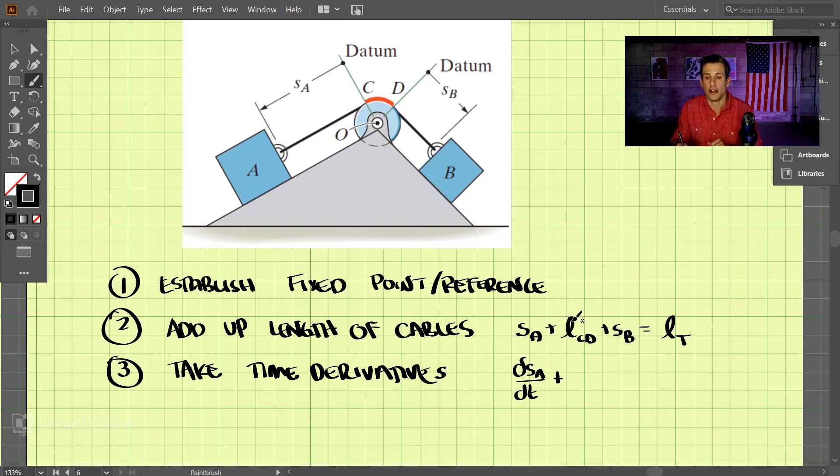So the derivative with respect to time is zero in that case. And then we have the derivative of SB with respect to time. And then the length of the cable is not changing with time either. So on the right-hand side, we have zero.